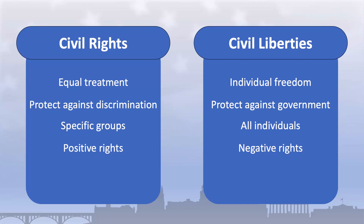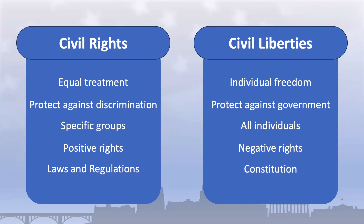The legal basis for civil rights is rooted primarily in laws and regulations, including constitutional amendments like the 14th Amendment, federal statutes like the Civil Rights Act of 1964, as well as court decisions. The legal basis for civil liberties, on the other hand, is found primarily in the protections afforded by the Constitution, and in particular by the Bill of Rights, which guarantees specific freedoms and protections such as freedom of speech, religion, press, assembly, and the right to privacy.